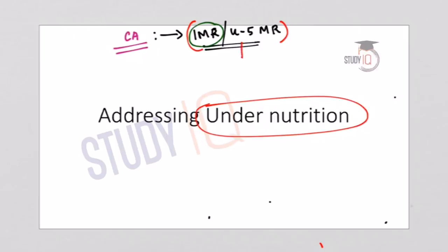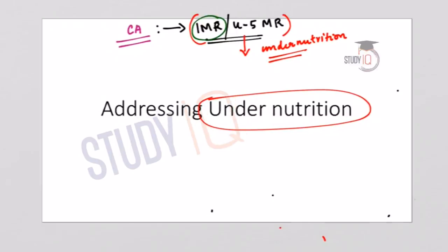But the major concern is that even though there is a decline in the infant mortality rate and the under-5 mortality rate, there is a simultaneous increase in undernutrition. This indicates a lack of a holistic approach in child healthcare to address the root causes of undernutrition. The government's focus was primarily to bring down IMR and under-5 mortality rate, but overall improvement in the nutritional status of children was lacking in policies and schemes.